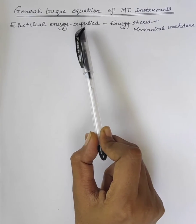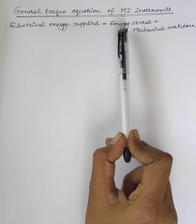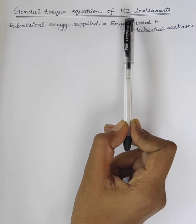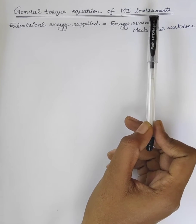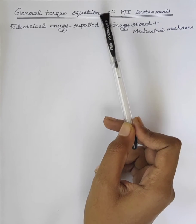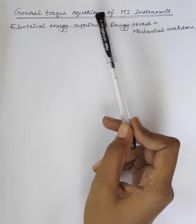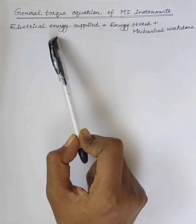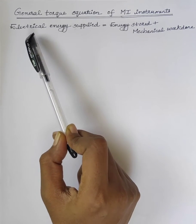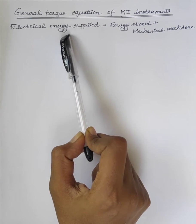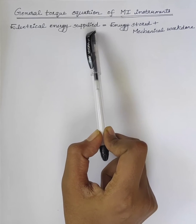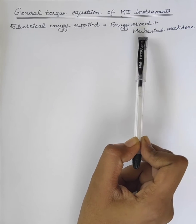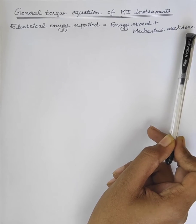Hi students, today we will discuss the general torque equation of moving iron instruments. In order to find out the torque equation, we are using this equation: electrical energy supplied is equal to energy stored plus mechanical work done.